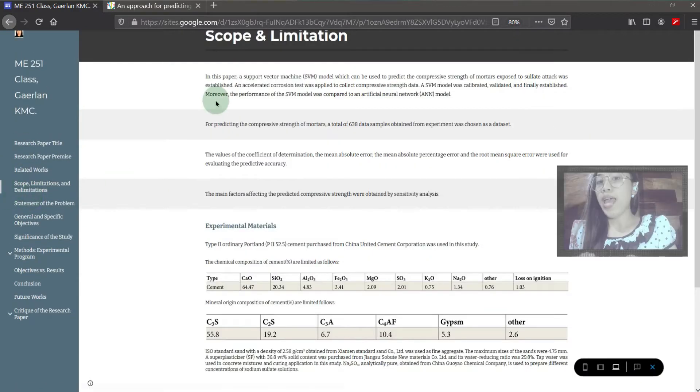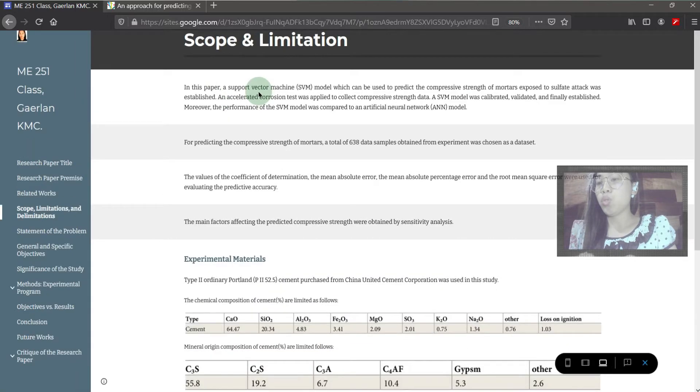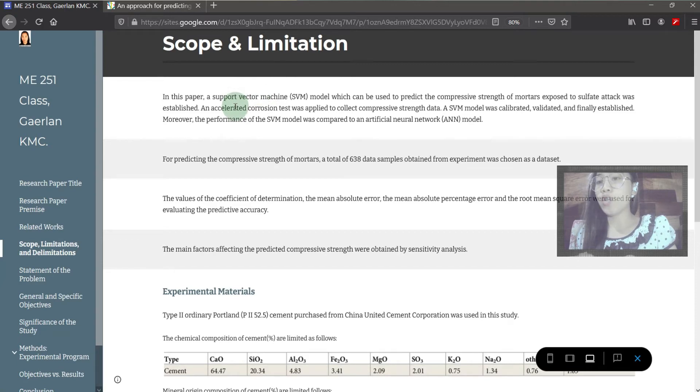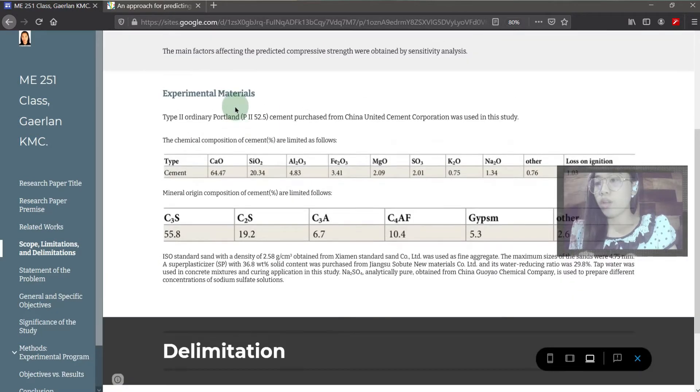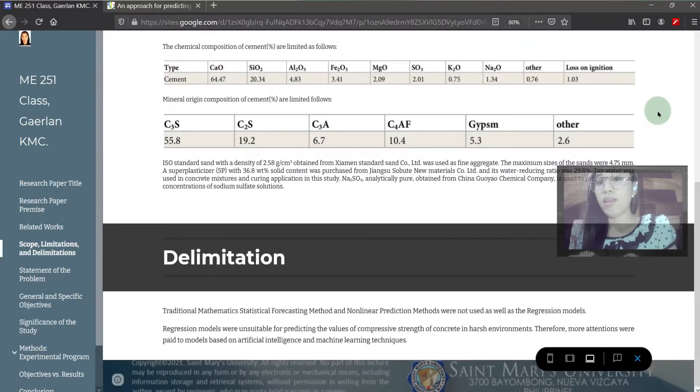Performance of SVM and ANN models were compared in predicting the strength of mortars which were exposed to sulfate effect. There were a total of 638 data samples. The values of the coefficient of determination R², the mean absolute error MAE, the mean absolute percentage error MAPE, and the root mean square error RMSE were used for evaluating the predictive accuracy, as well as sensitivity analysis, which was used to obtain the main factors.